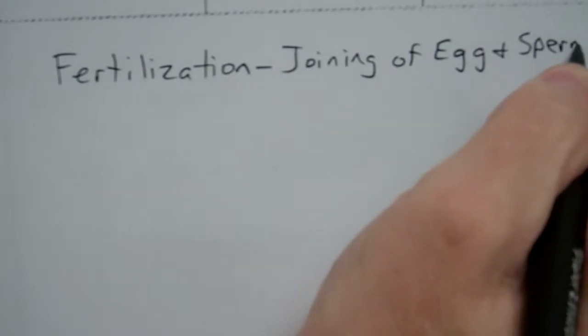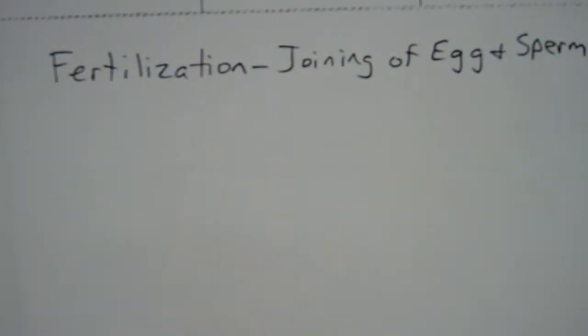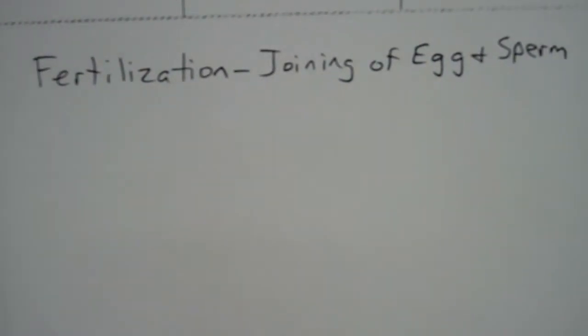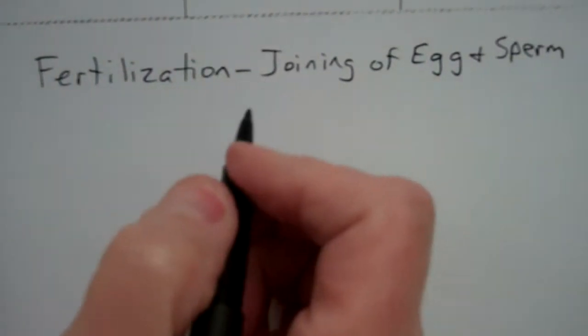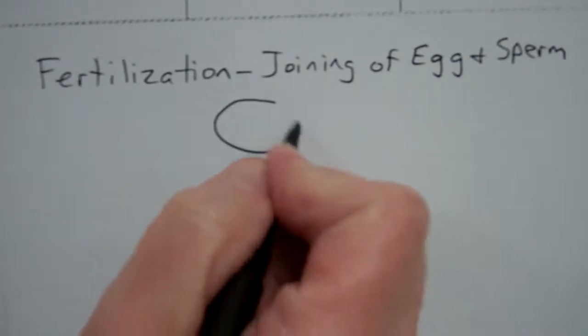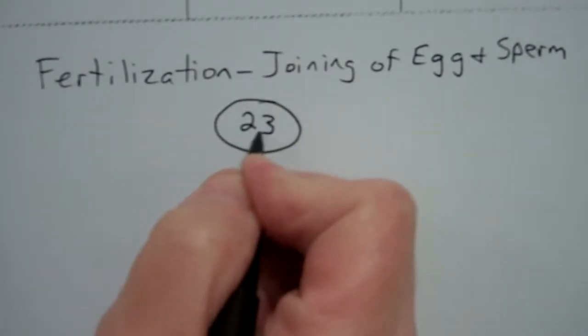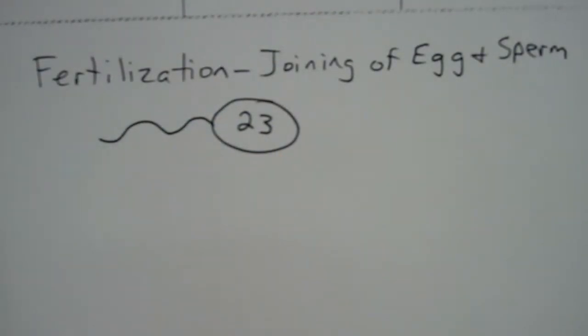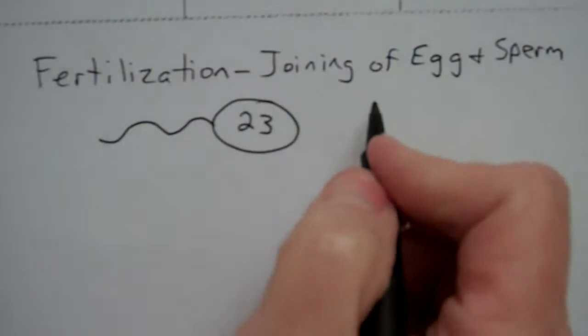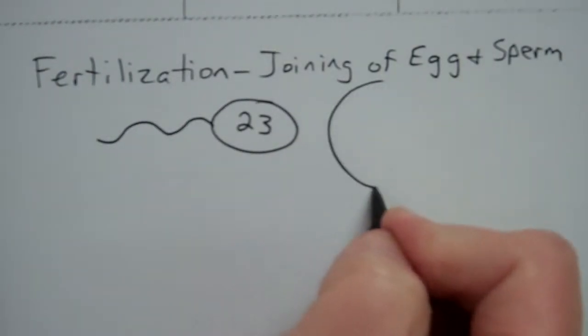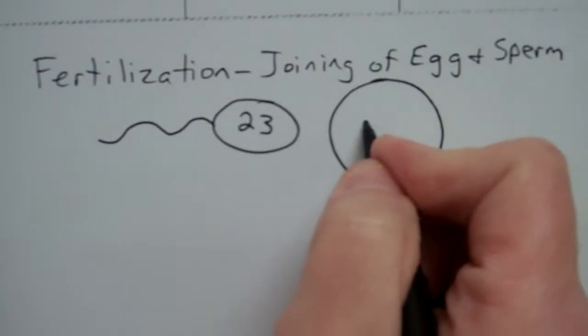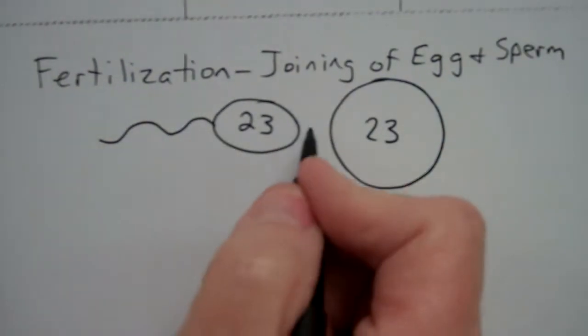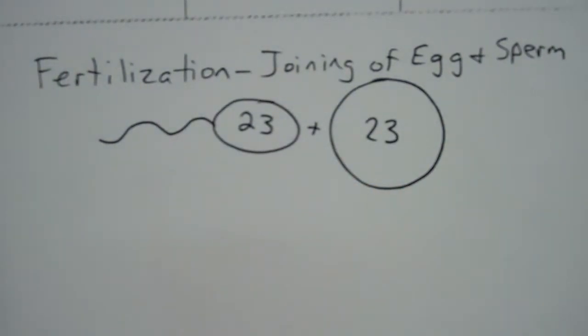So the egg and sperm unite. The nucleus of both of those cells unites. And remember that inside of a sperm cell, for a human anyway, there's 23 chromosomes. 23 different kinds of chromosomes. And in the female egg there are also 23 chromosomes.